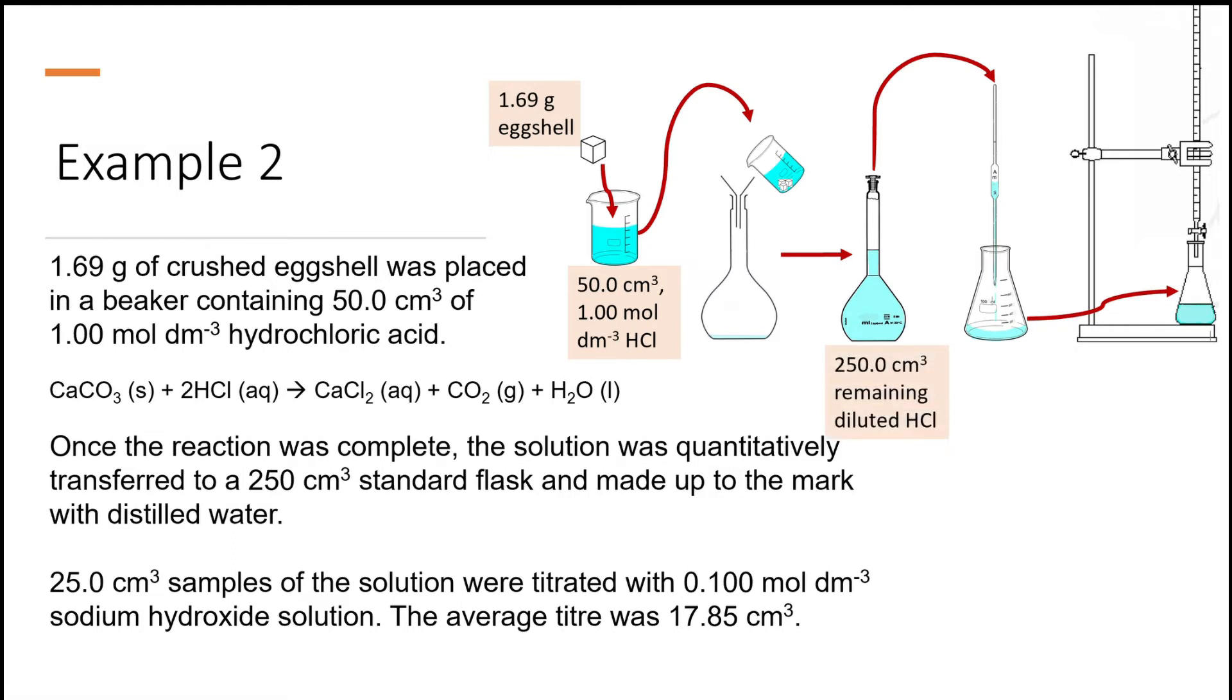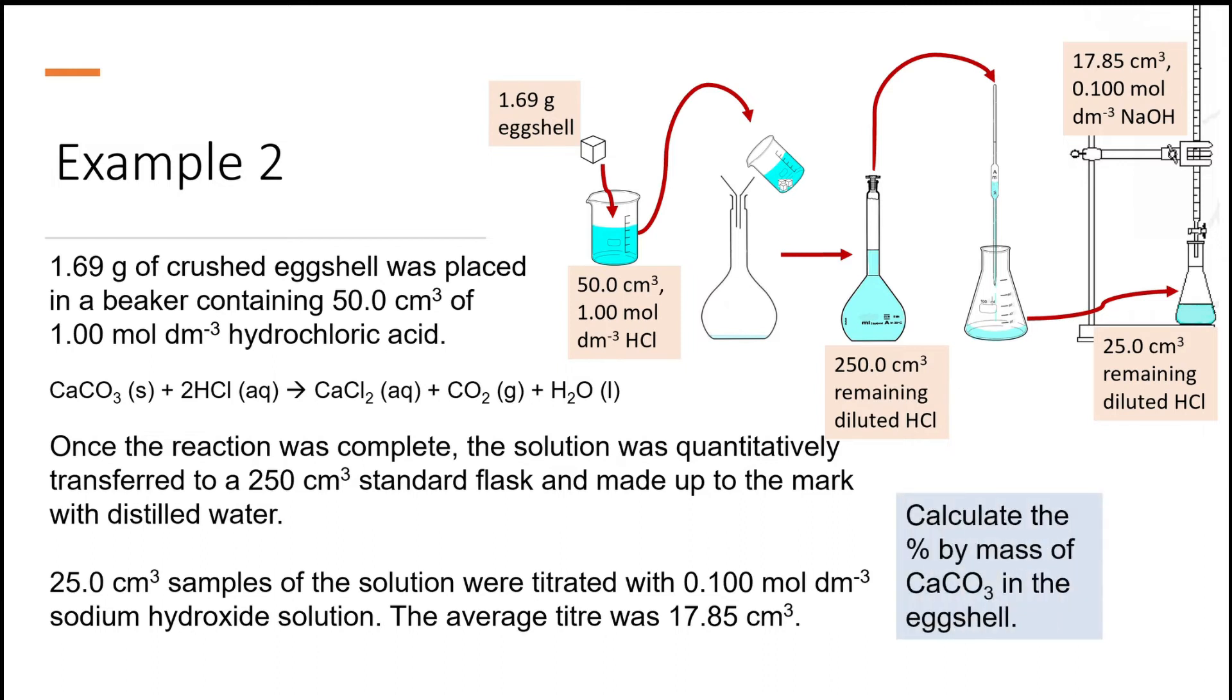Once the reaction was completed, the solution was quantitatively transferred to a 250 ml standard flask and made up to the mark with distilled water. 25 ml sample of the solution were titrated with 0.1 molar of sodium hydroxide solution and the average titer was 17.85 ml. Calculate the percent by mass of calcium carbonate in the eggshell.